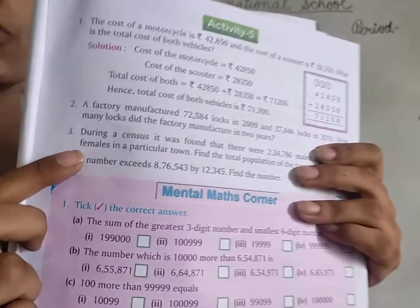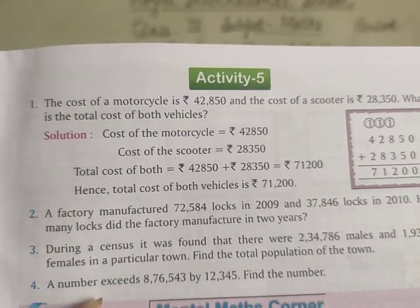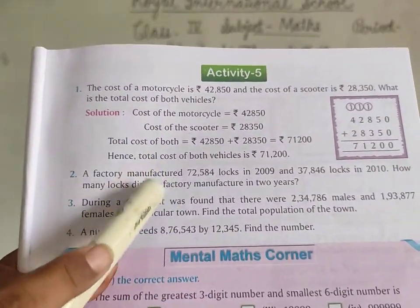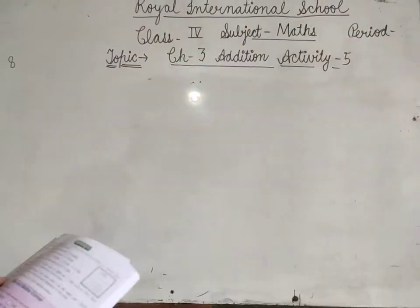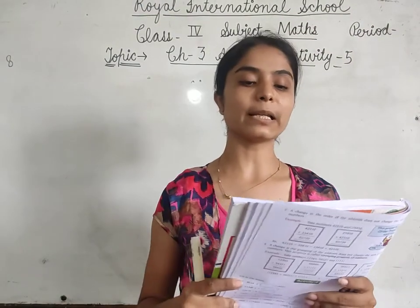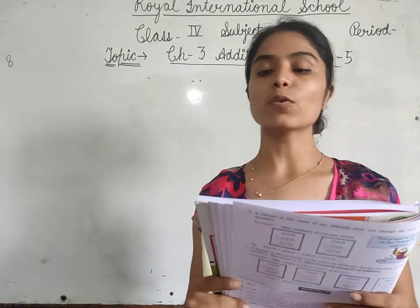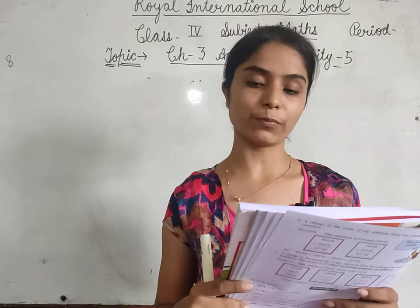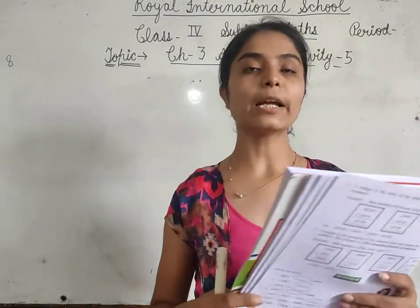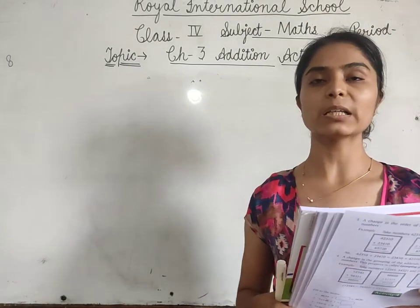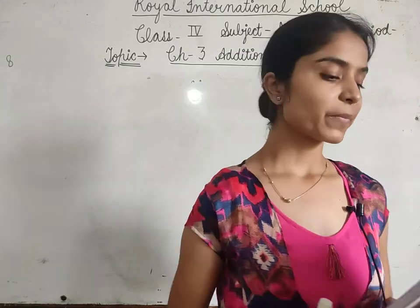Activity number 5, page number 37 — question number 1 is already done in your book, तो question number 1 को आप copy कर लेंगे। हम question number 2, 3, 4 करेंगे। Question number 1 में: the cost of a motorcycle is ₹42,850 and the cost of a scooter is ₹28,350 — what is the total cost of both vehicles? तो दोनों को add कर देंगे।